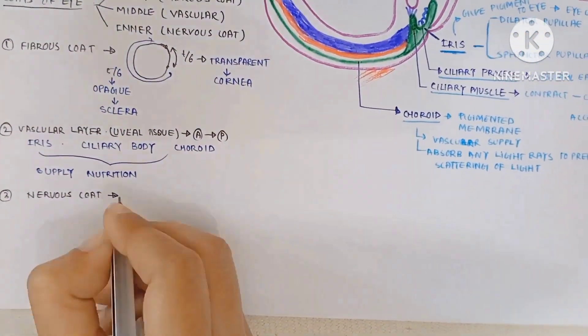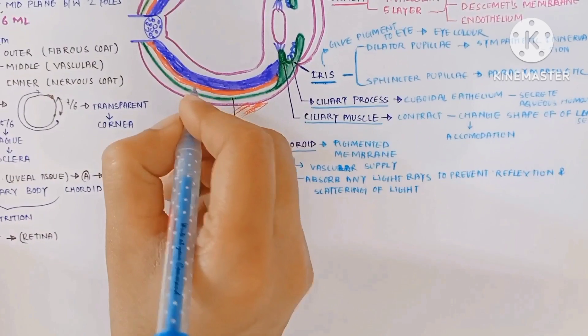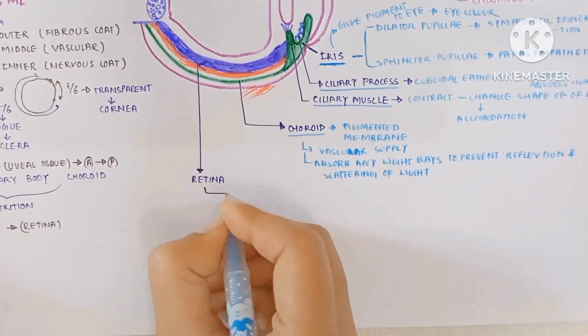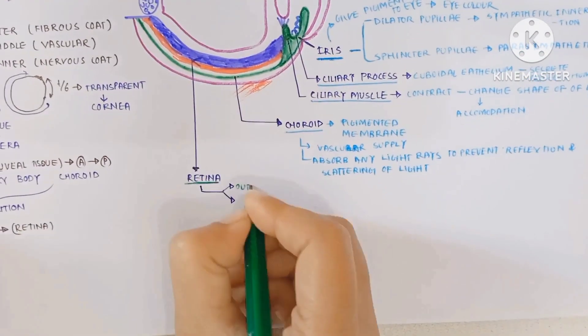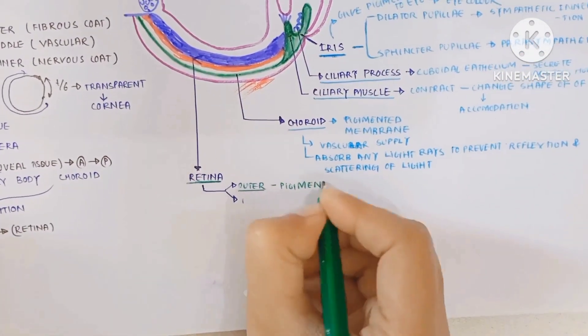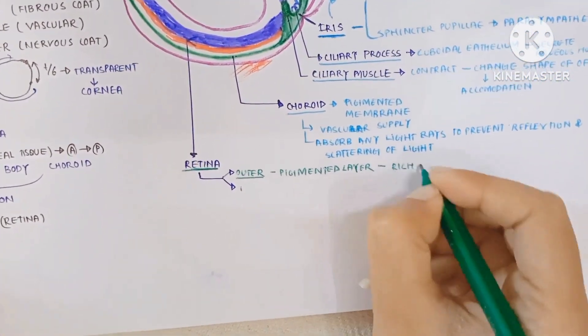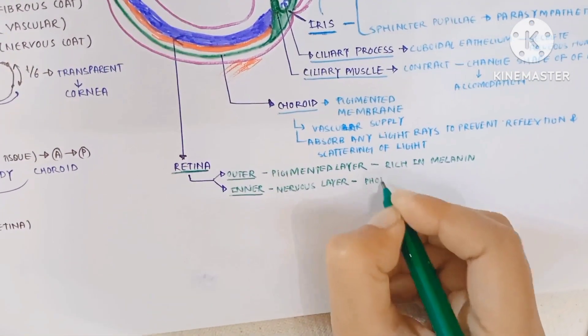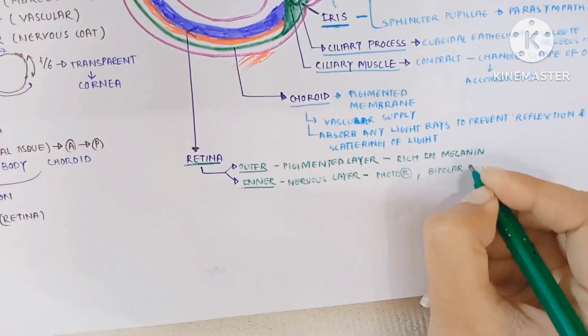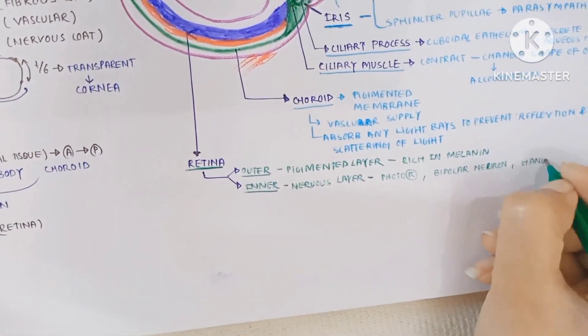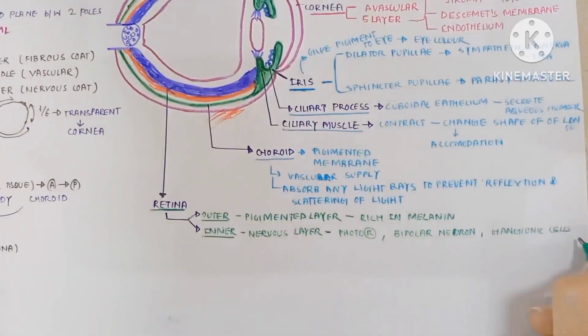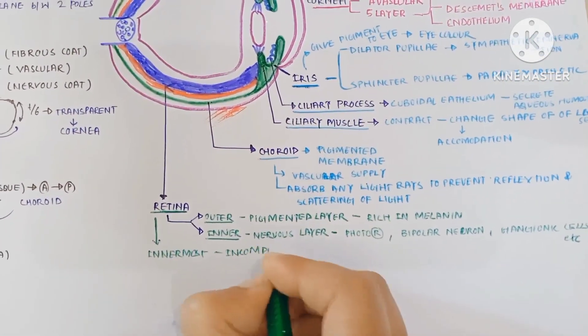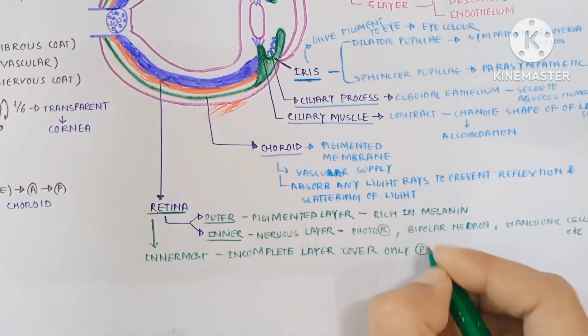The third is the nervous coat which is the retina. The retina is made up of two layers: the outer layer is pigmented and rich in melanin. The inner layer is the nervous layer which contains photoreceptors, bipolar neurons, and ganglionic cells. The retina is the innermost layer, an incomplete layer covering only the posterior part of the eyeball.